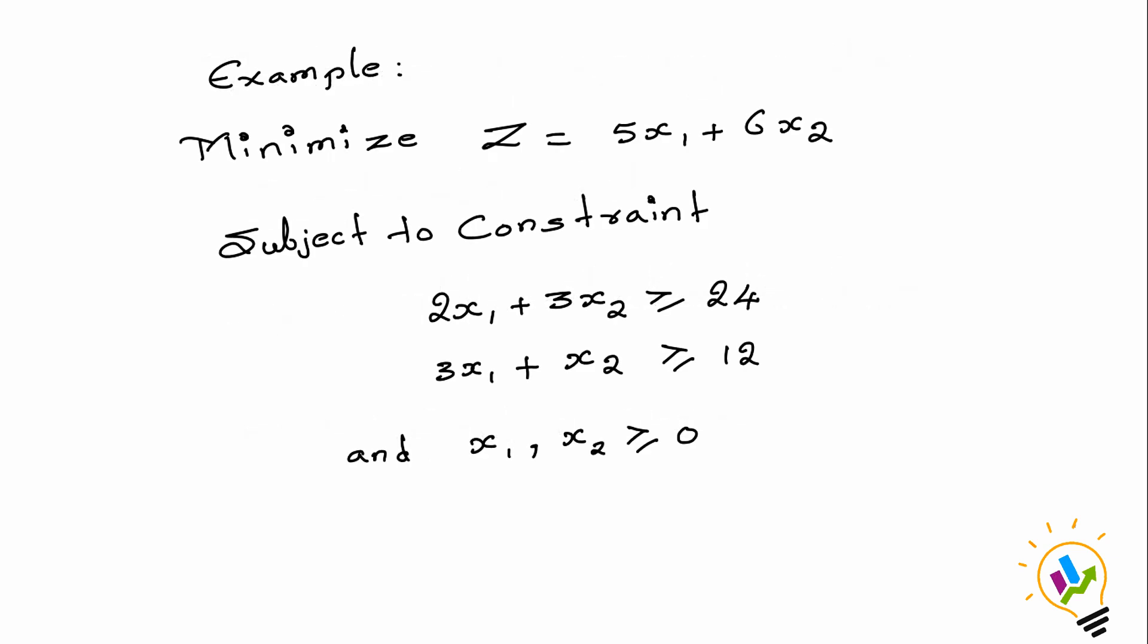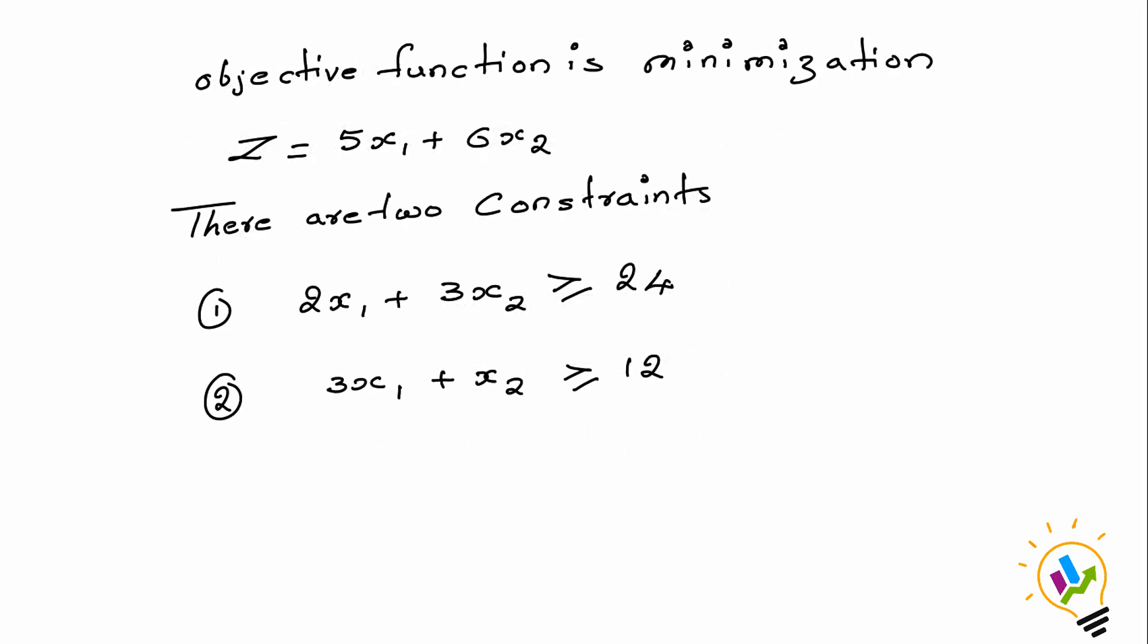This is an example where we have an objective function for minimization and two constraints. The first constraint is 2x1 plus 3x2 is greater than or equal to 24.